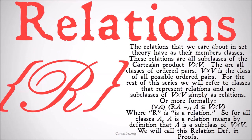The relations that we care about in set theory have as their members classes. These relations are all subclasses of the Cartesian product V times V — basically the class of all ordered pairs. V times V, or the Cartesian product of the universe, is the class of all possible ordered pairs. For the rest of the series we'll refer to classes that represent relations and are subclasses of the Cartesian product of the universe simply as relations. More formally, for all A, A is a relation means by definition that A is a subclass of the Cartesian product of the universal class. We'll call this the relation definition in proofs.